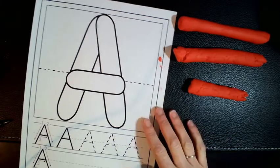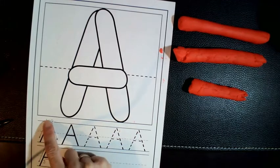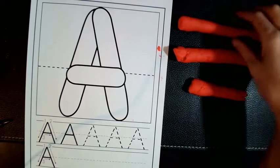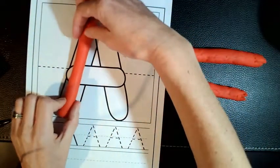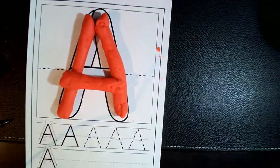So now we build our letter like it's written down here. We have our big line down, jump up, big line down, little line across. So we put our big line down, jump up, big line down, and little line across. And we have built our A.